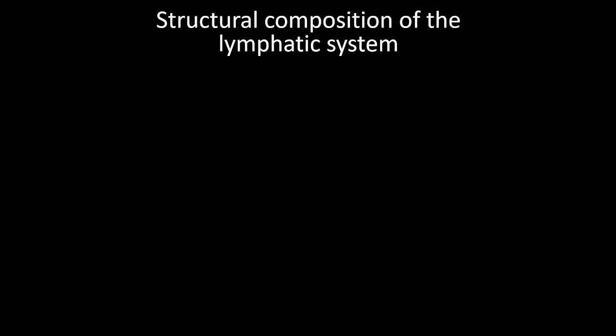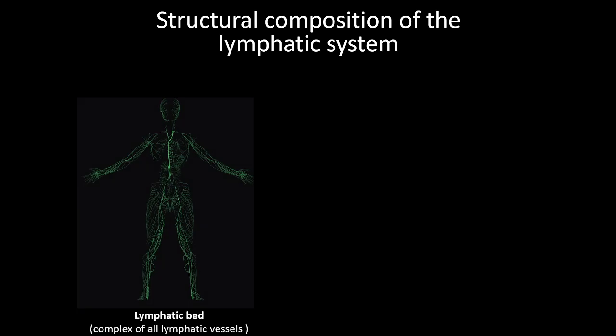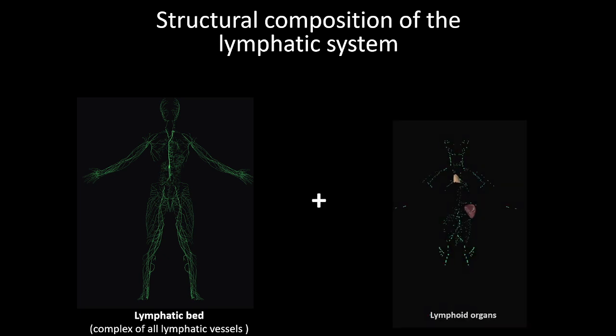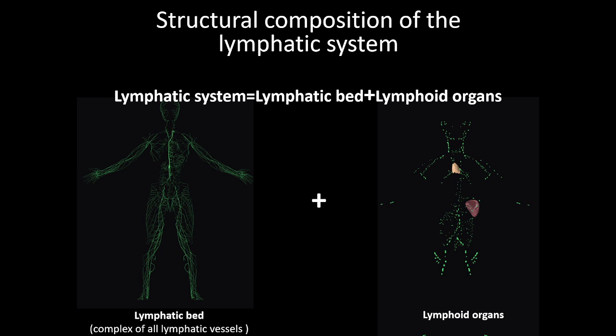Structural composition of the lymphatic system. The lymphatic system consists of the lymphatic bed — meaning the complex of all lymphatic vessels — and lymphoid organs. So we can say: lymphatic system equals lymphatic bed plus lymphoid organs.